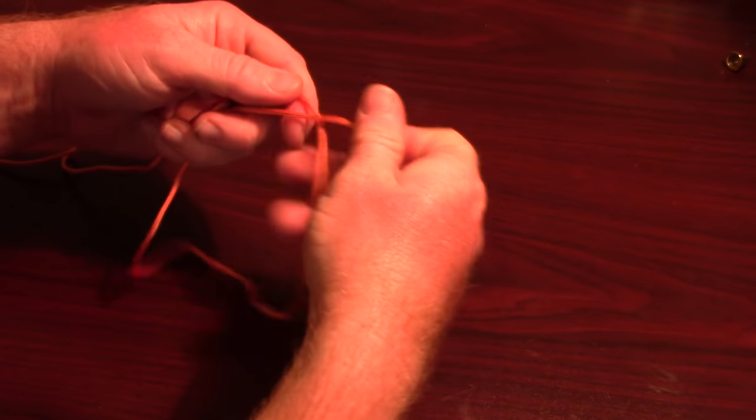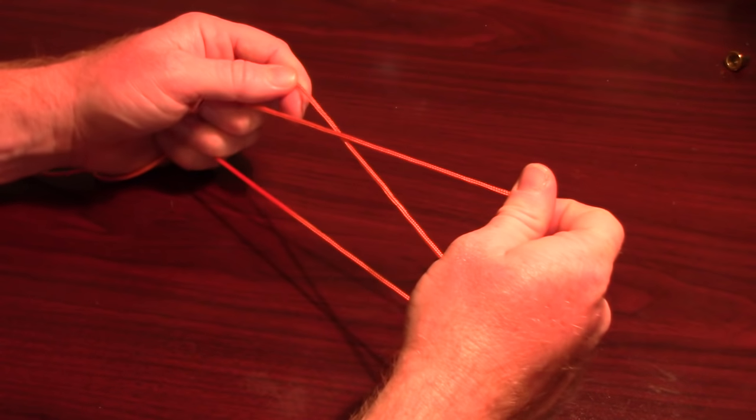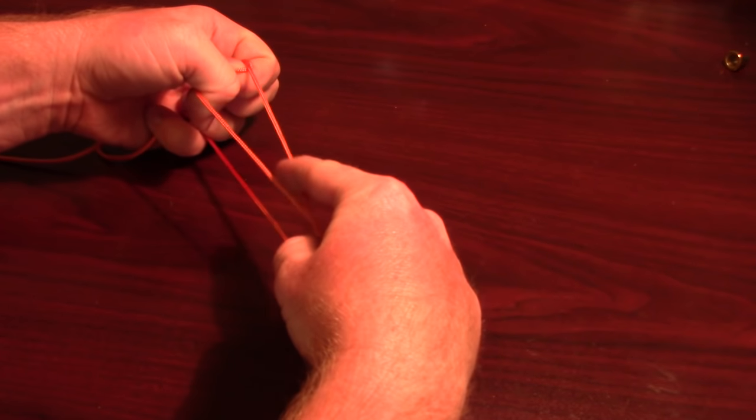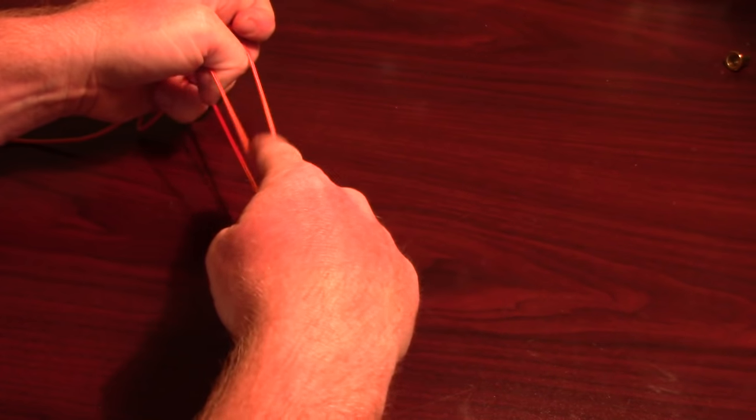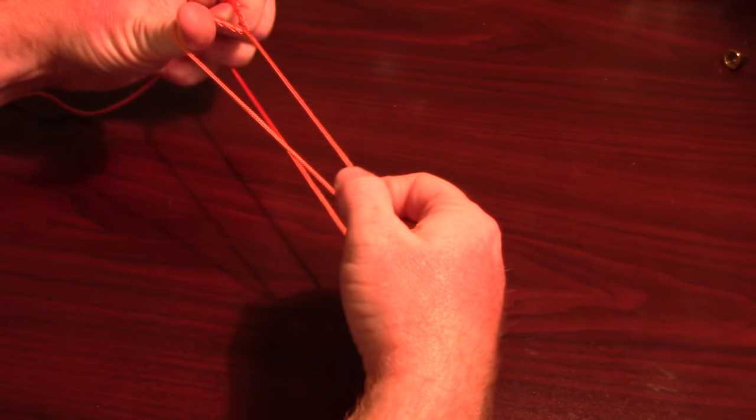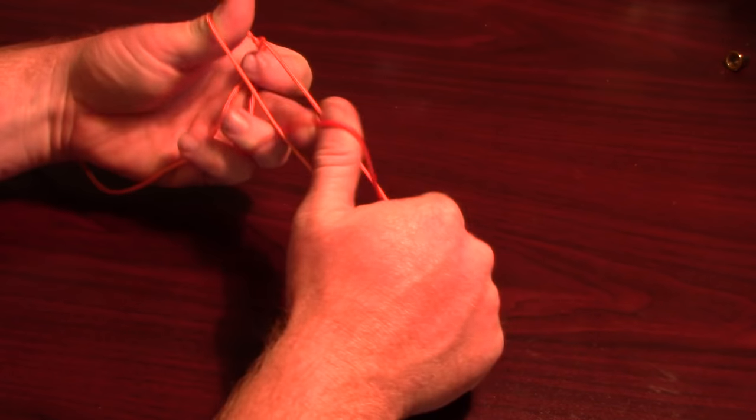Start by making a loop with your line and holding the bottom part open with your lower fingers. Then use your thumb and index finger to twist the line around itself about 3-4 times. Then bring the bottom part of the loop up through the middle of your twists.